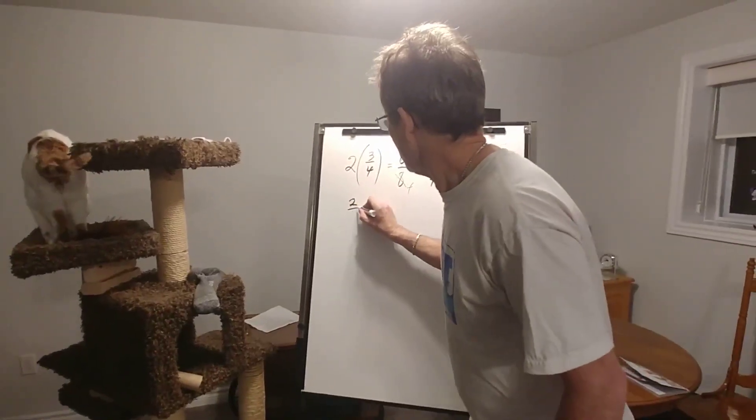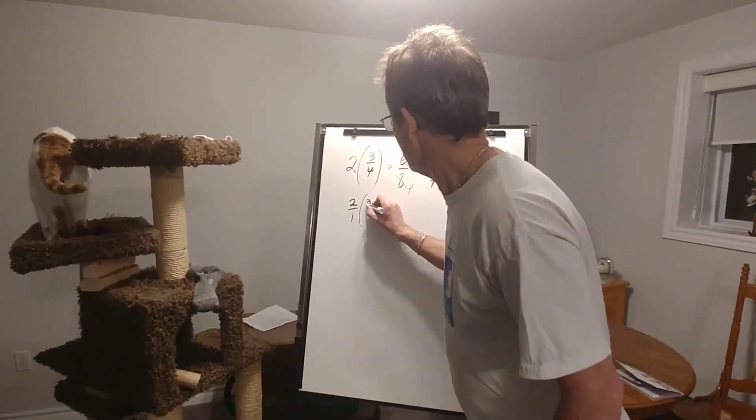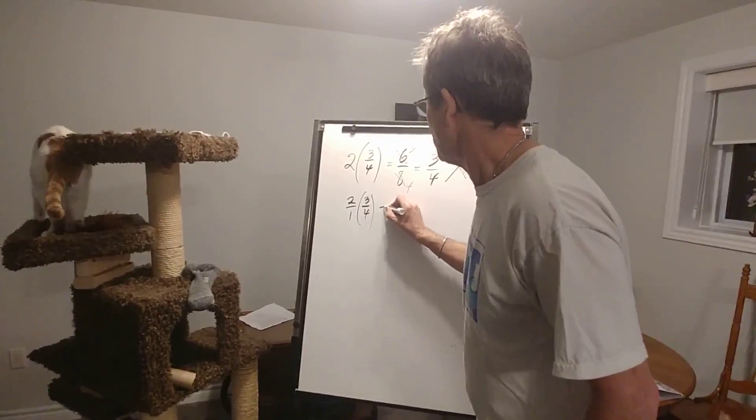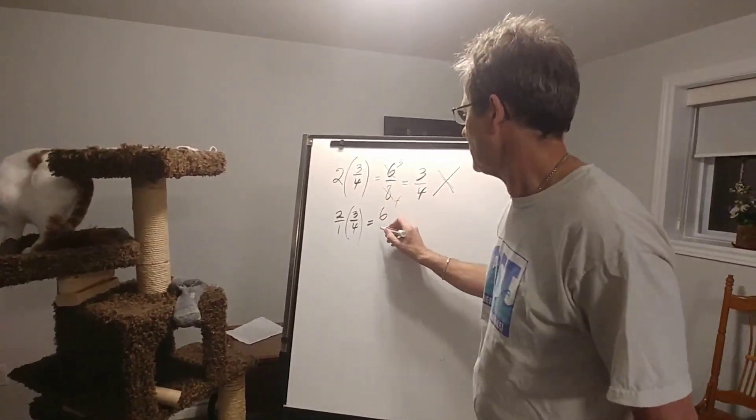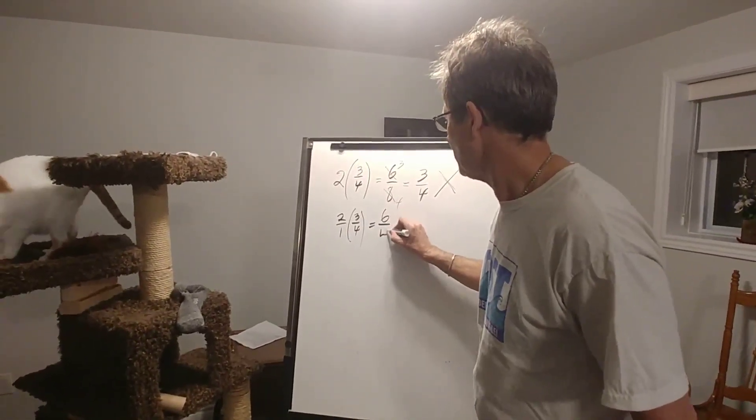Think of it as two over one times three quarters. And then simply multiply the top numbers, you get six. Multiply the bottom numbers, you get four.